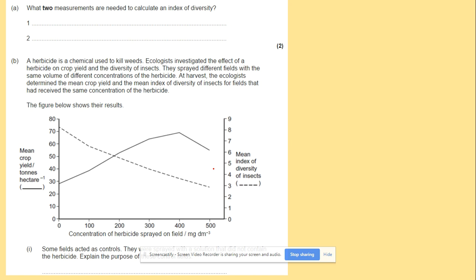Here we've got the question: what measurements are needed to calculate index of diversity? We've mentioned that before. Number of individuals, which stands for a lower n in equation, and total number, which stands for big capital N.